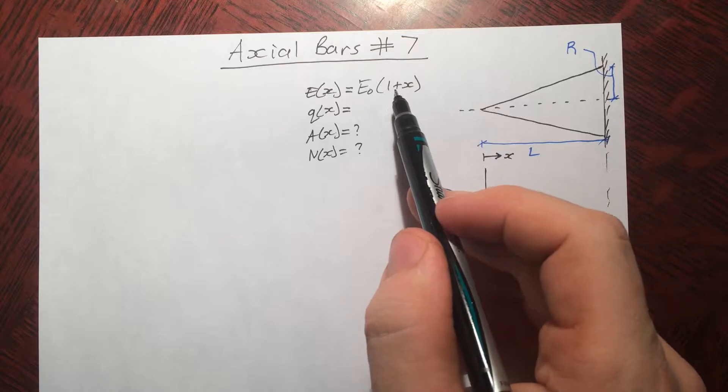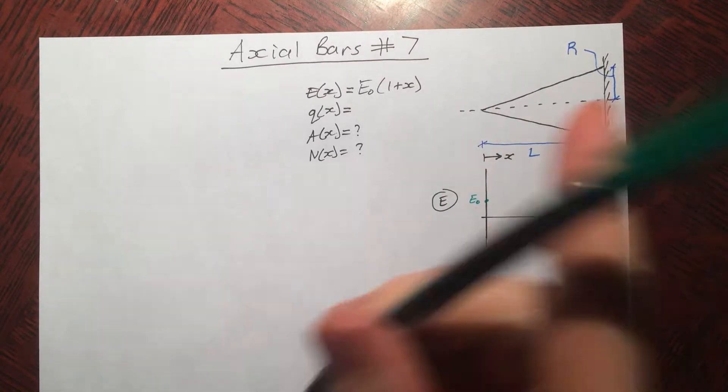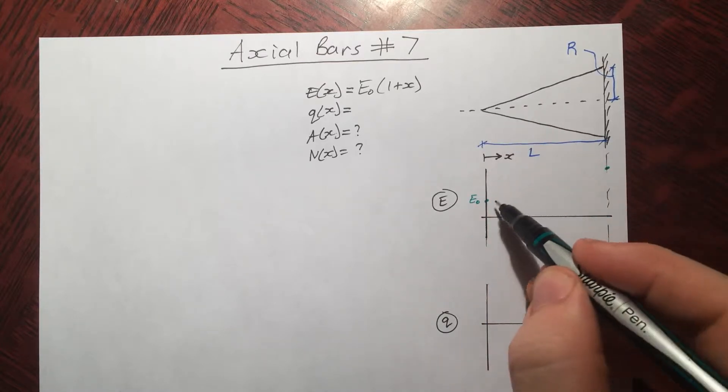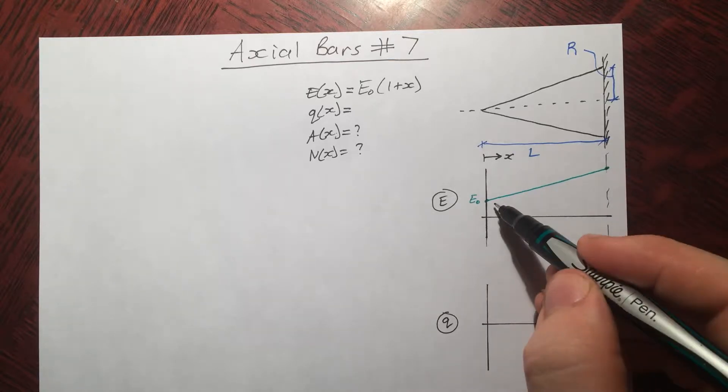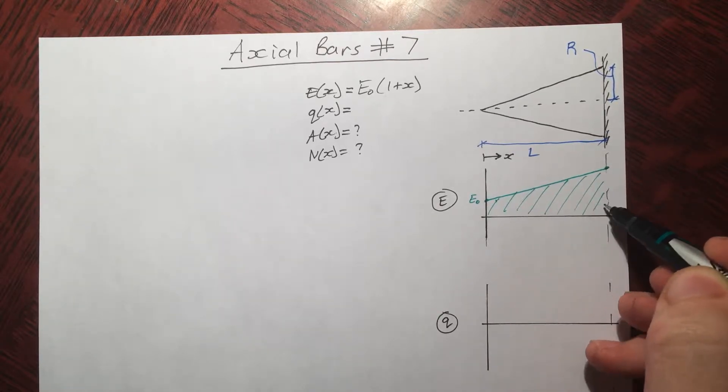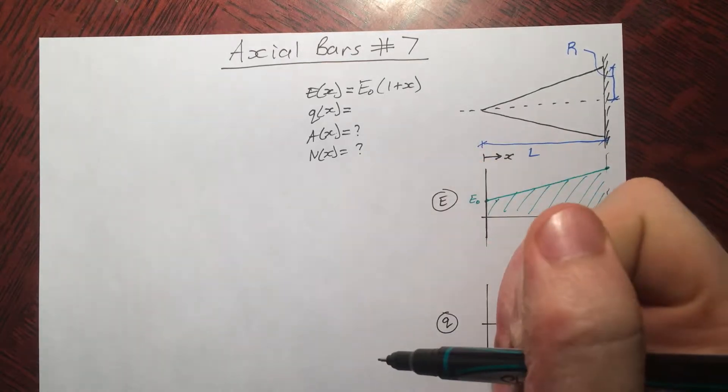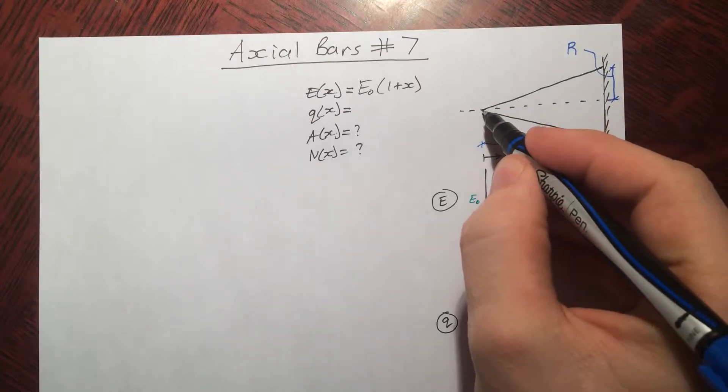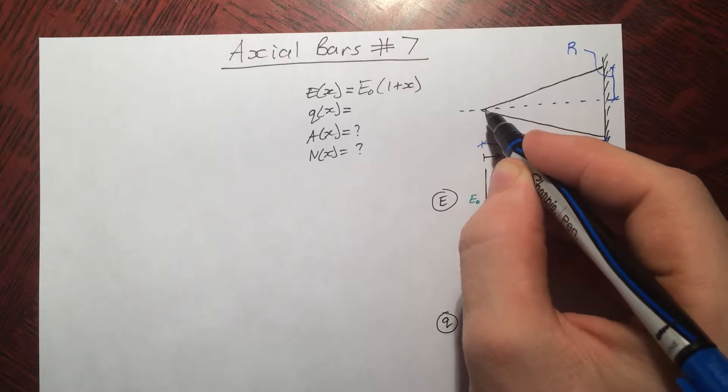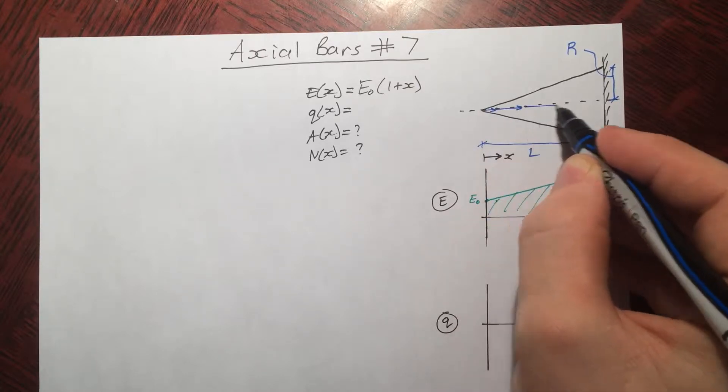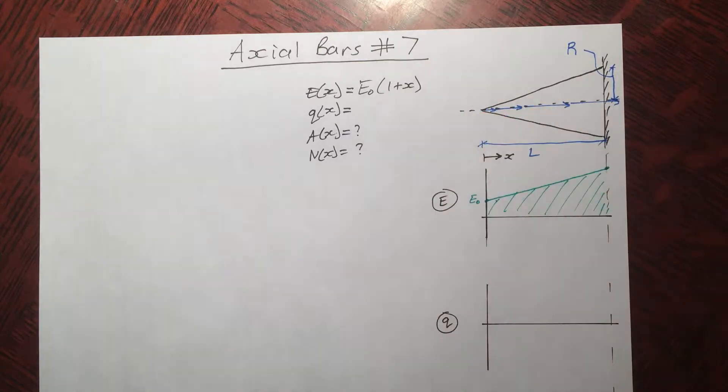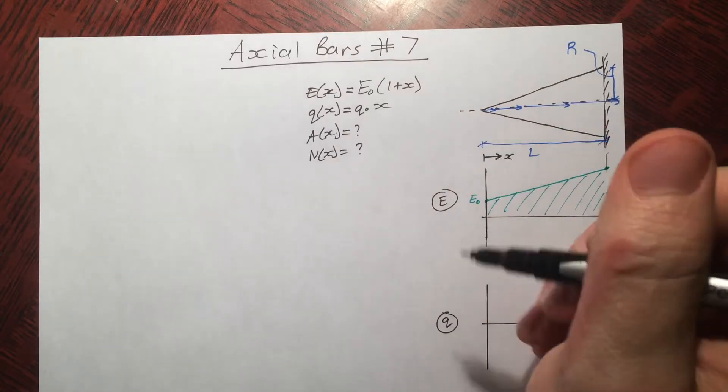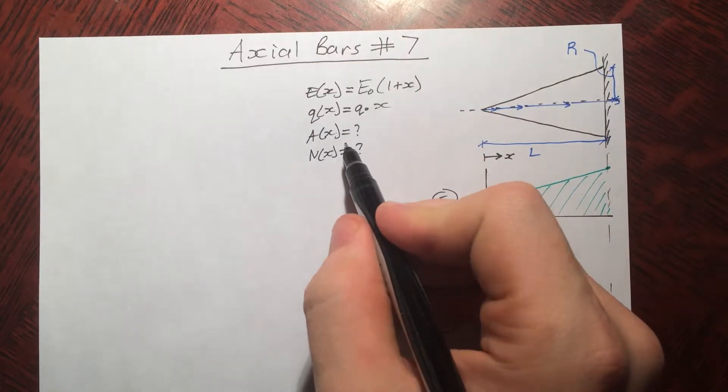So let's just plot this straight away on our e graph. E naught, and when x equals l, the amount is going to be e naught, 1 plus l. So if l was a number, it would be like, you know, 1 plus 4 if l was 4. So it's going to go up.